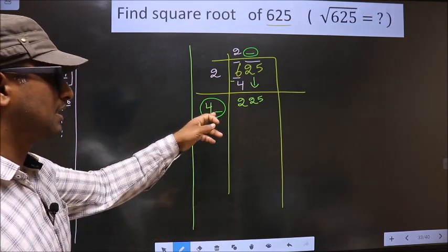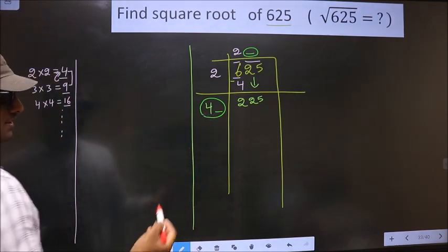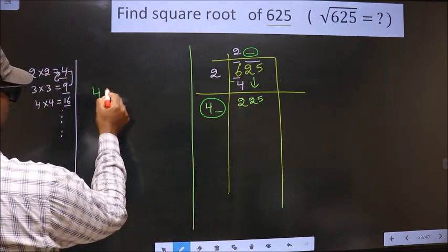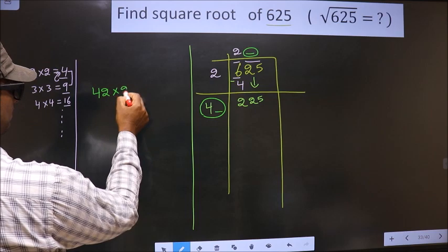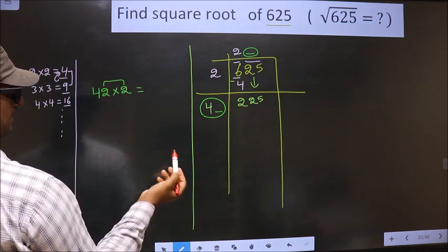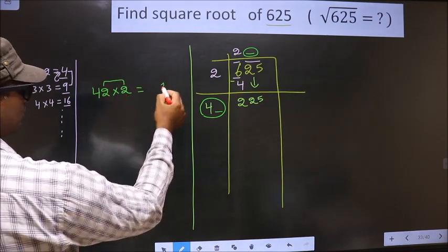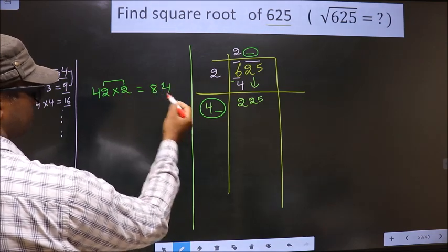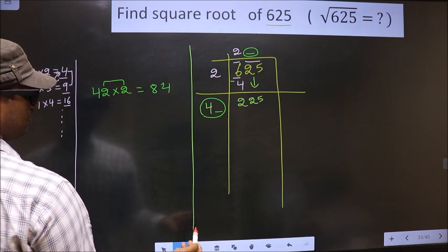Let us find this number here. See, if I take 2, I should also multiply by 2. These two numbers should be same. So 2 × 2, 4. Now 2 × 4, 8. 84 is far away from 225.